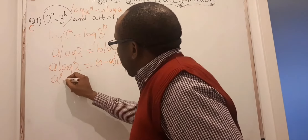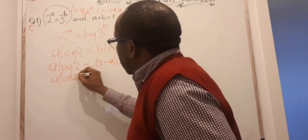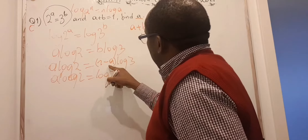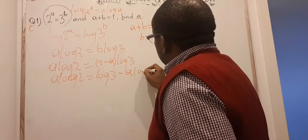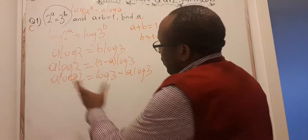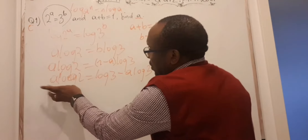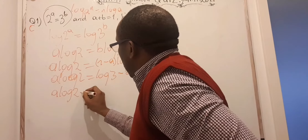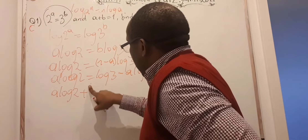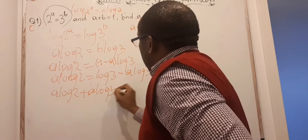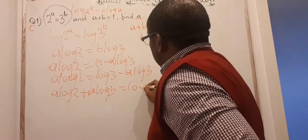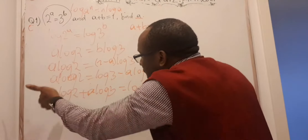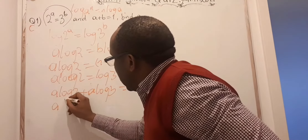If I arrange this well and expand, I get log 3 minus a·log 3. I can take the minus a·log 3 to the other side, since they are similar log terms. Then I have a·log 2 plus a·log 3 equals log 3. Because this term has moved to that side, a is common here, so I can factorize it out, and I get a times (log 2 + log 3) equals log 3.